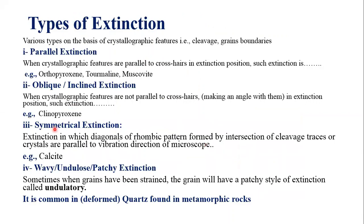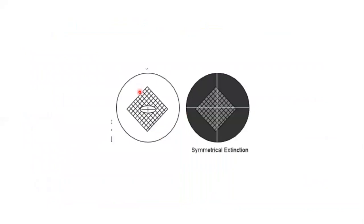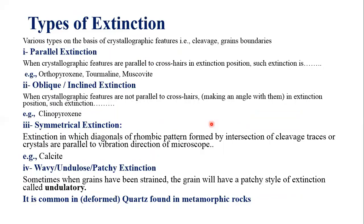Symmetrical extinction: when the diagonals of rhombic patterns formed by the intersection of cleavage traces or crystal boundaries are parallel to the vibration direction of the microscope, such extinction is called symmetrical extinction. You can observe in this diagram a rhombic pattern formed by the cleavages of a mineral. In the extinction position the diagonals of this rhombic pattern become dark because the diagonals are parallel to the vibration direction of the microscope, and symmetrical extinction appears almost in the form of a net.